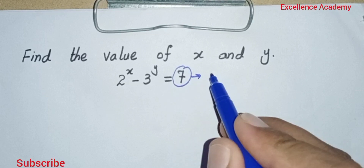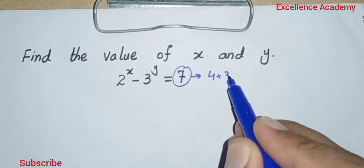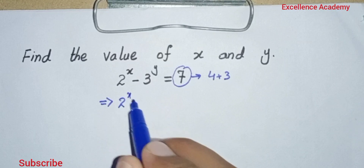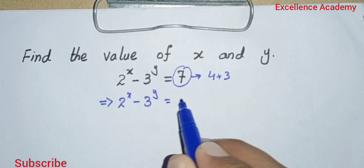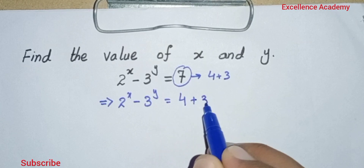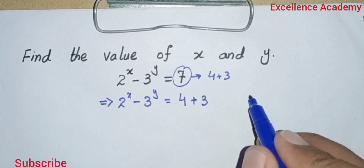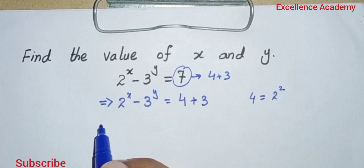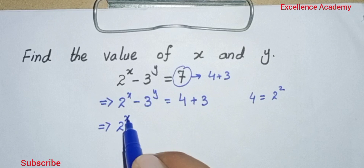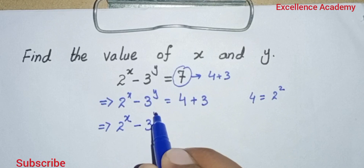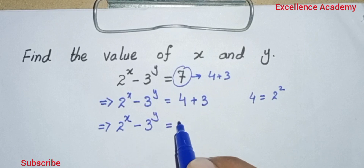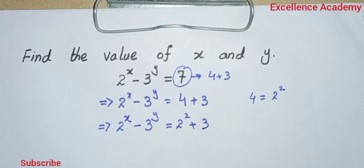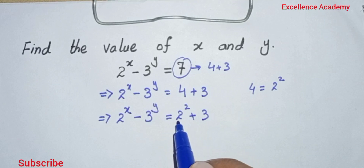I will break 7 into two terms: 4 plus 3. So 2^x minus 3^y equals 4 plus 3. We can write 4 as 2^2, so our equation will become 2^x minus 3^y equals 2^2 plus 3.